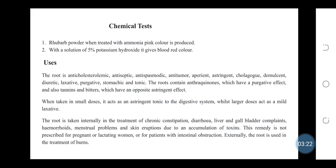Chemical Tests: Rhubarb powder when treated with ammonia, a pink color is produced. With a solution of 5% potassium hydroxide, it gives a blood red color.